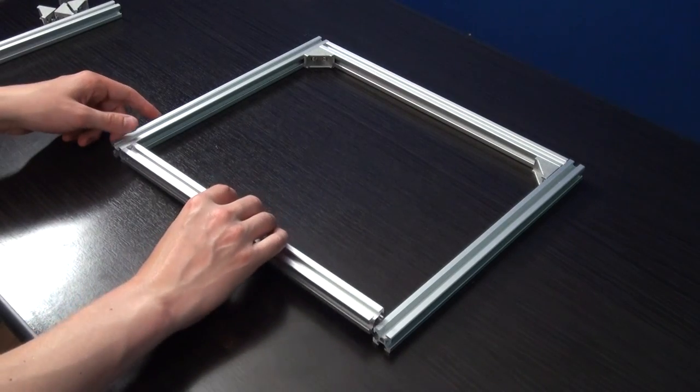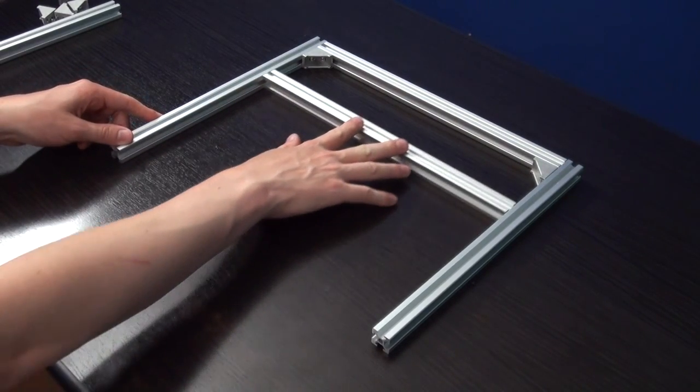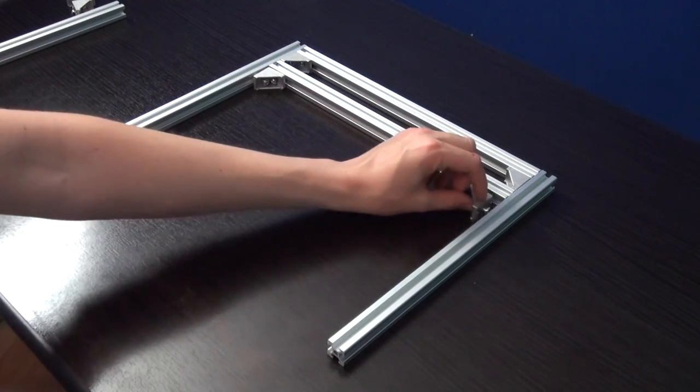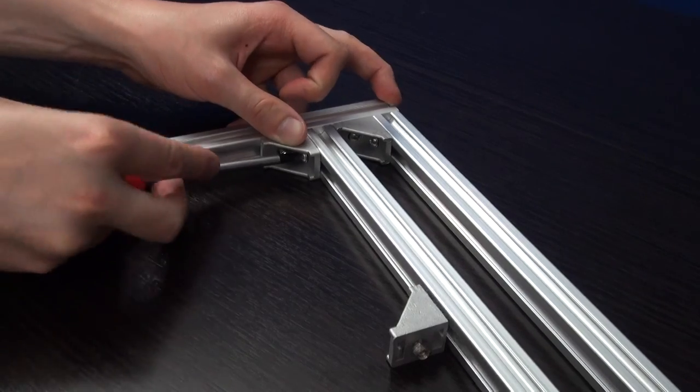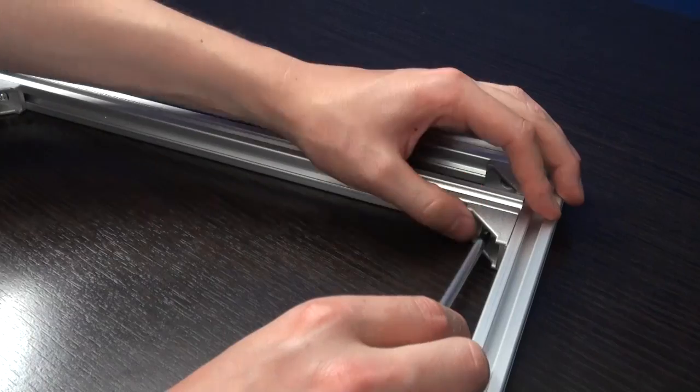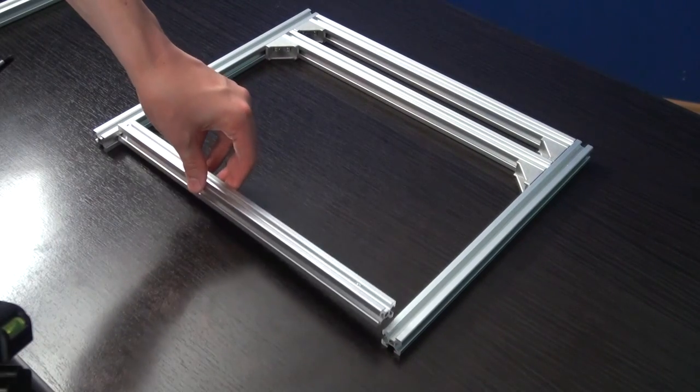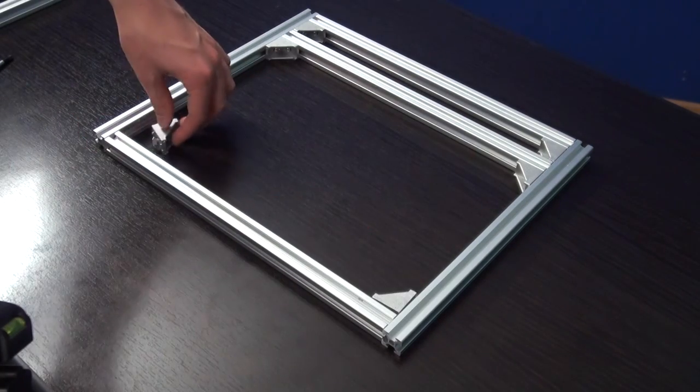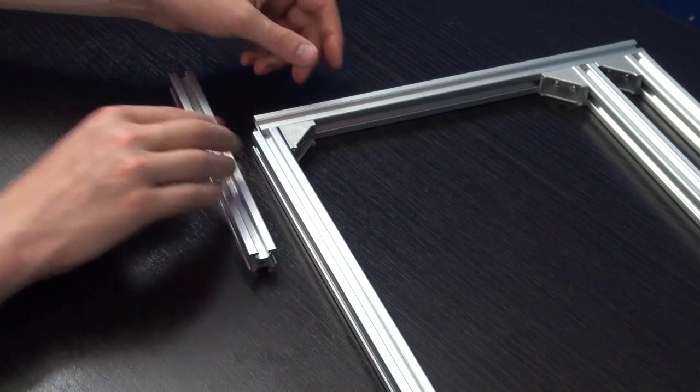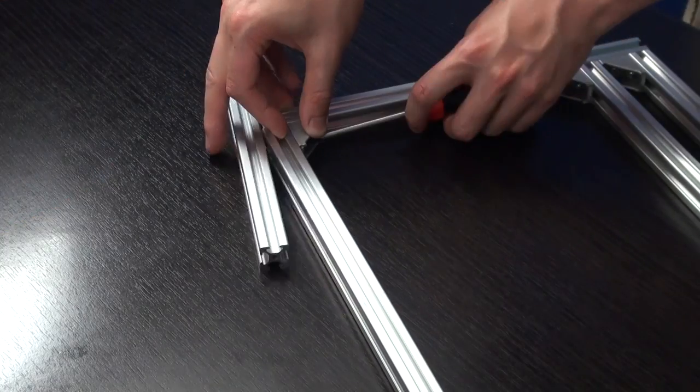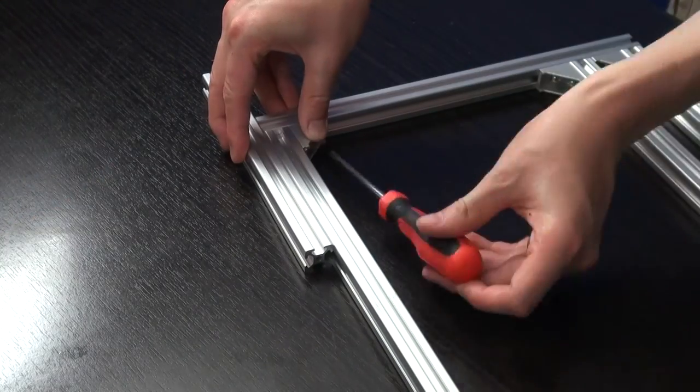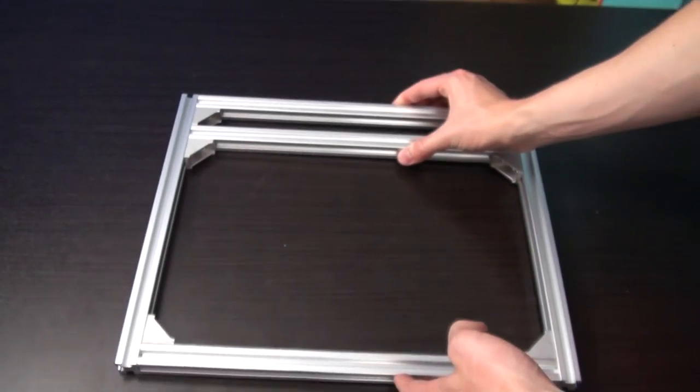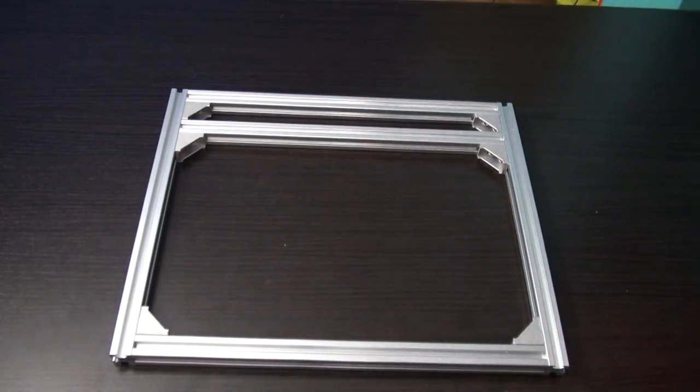The next step is to add the second 360mm profile and place it tightly against the two corner brackets from the previous step. Attach it with two more corner brackets. The third 360mm profile is placed against the opposite side. Again use the trick with the extra piece of material to help with alignment. The first frame is now finished and we are ready to start with frame number two.